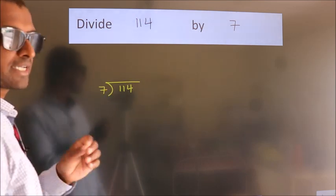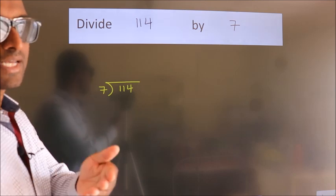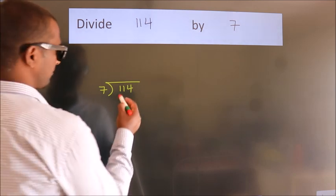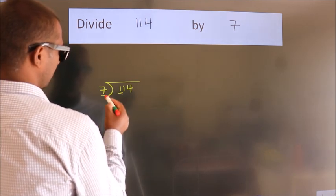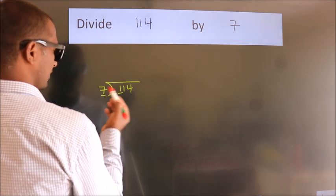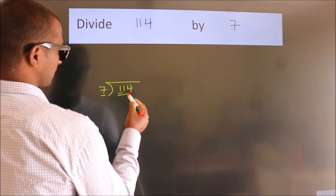This is step 1. Next, here we have 1, here 7. 1 is smaller than 7, so we should take 2 numbers: 11.